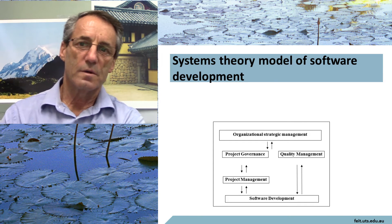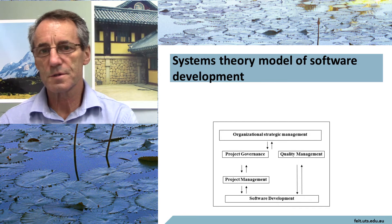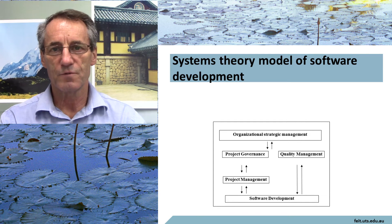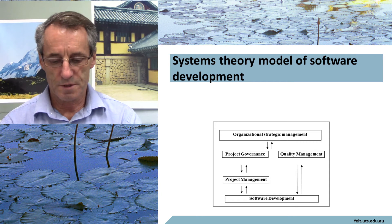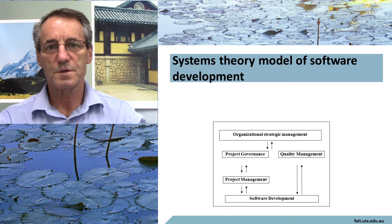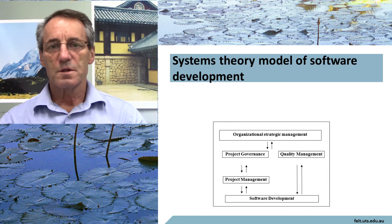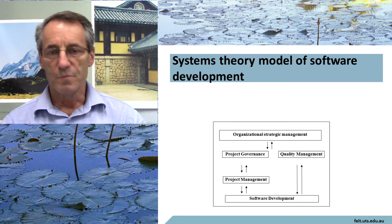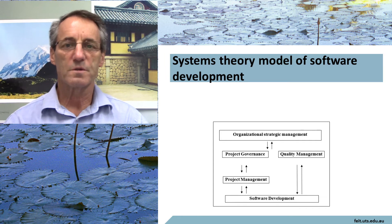To give some idea of what a system theory model looks like, there's one. It shows the system theoretic view of a software development or system development project, starting with the organization's strategic management. We have the organization's strategic directions — decisions about what products or software systems are going to be developed, and the budget and resource allocations for that, as well as the resource allocations to the rest of the organization.